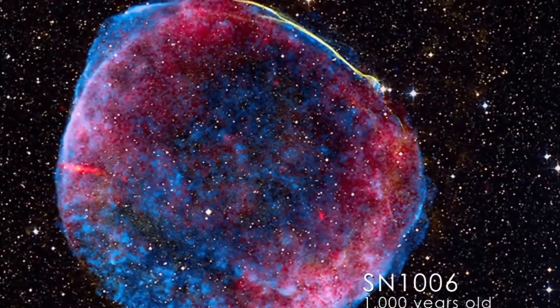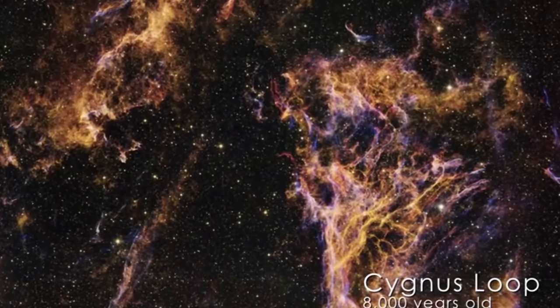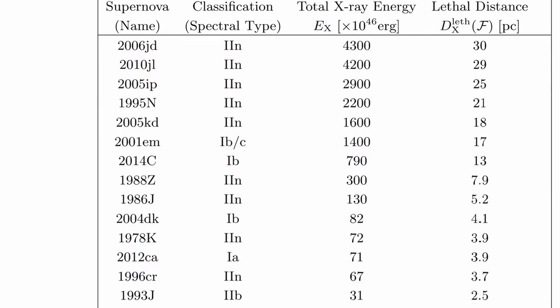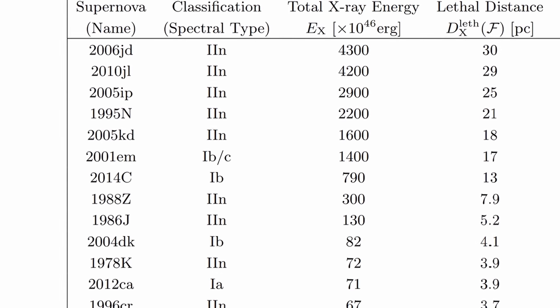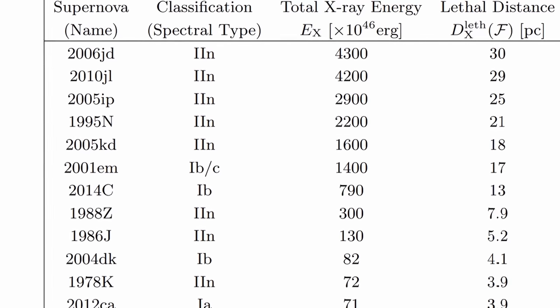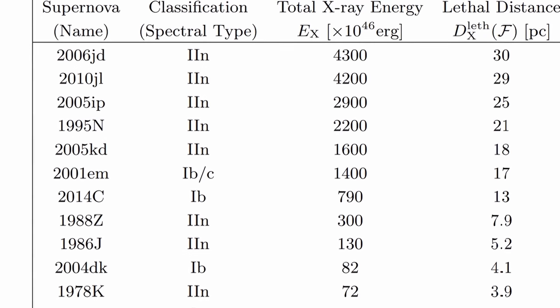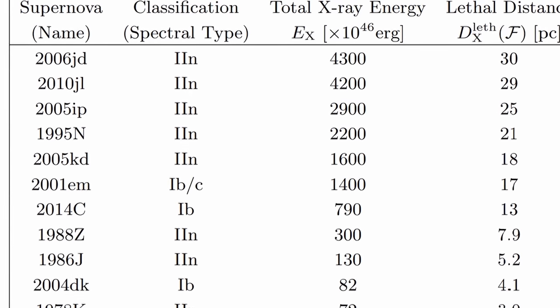Now obviously this is not a conclusive theory yet, but it is an interesting proposition. But the scientists in this paper went a little bit further. They also took a look at 31 known supernova that were actively studied and discovered in the last few decades and classified them in terms of hazard based on the total amount of x-rays emitted during these events.